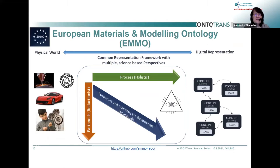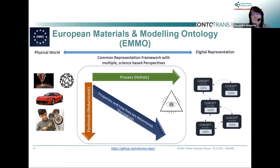When we look into the ontology, we have to think about real life. There is a physical world where things happen — this Ferrari is unfortunately not in my garage, but my Ford has cogwheels. To get this into a computer, I need to find a common representation framework to move from the physical world to digital representation. We have a holistic process to get there, working with reductionism, and then we have properties and how they are determined — perceptual objects, concepts, metadata, and data.